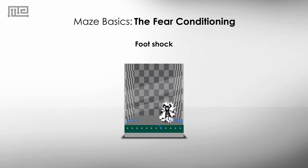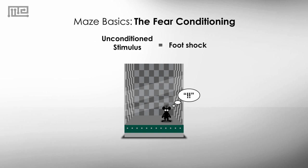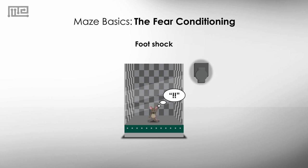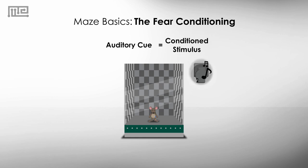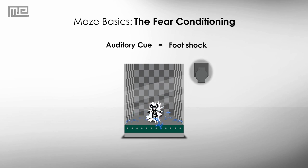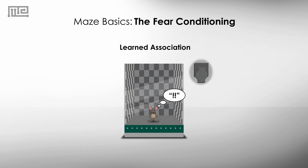Take for example a foot shock. Rodents naturally find this unpleasant and will react by freezing. Since rodents are naturally averse to this, the foot shock is considered an unconditioned stimulus. If the foot shock is delivered at the same time as a neutral auditory cue, the animal will learn that the auditory cue is associated with the foot shock and respond to the auditory cue alone by freezing. The auditory cue is the conditioned stimulus.